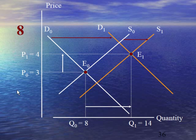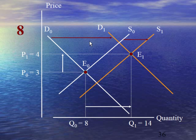Case number 8 describes that rise in demand is more than rise in supply, meaning buyers are more than sellers. As a result, there will be a shortage of the product in the market, and due to this shortage the equilibrium price will increase from 3 to 4.